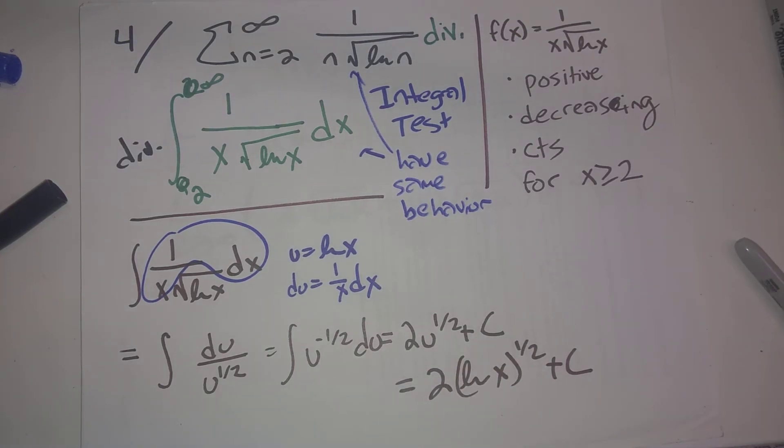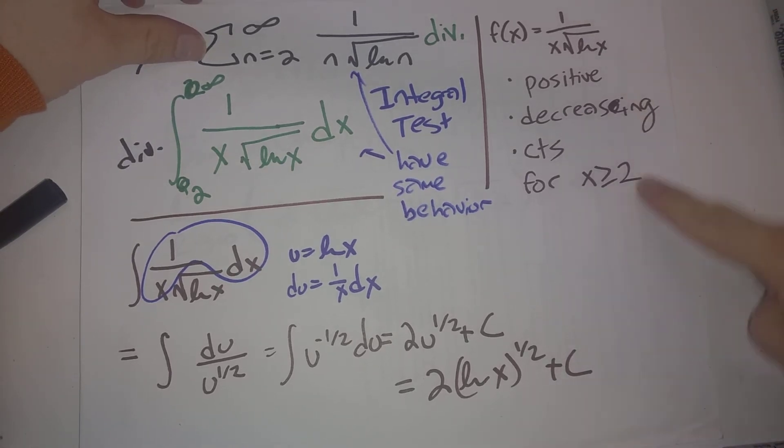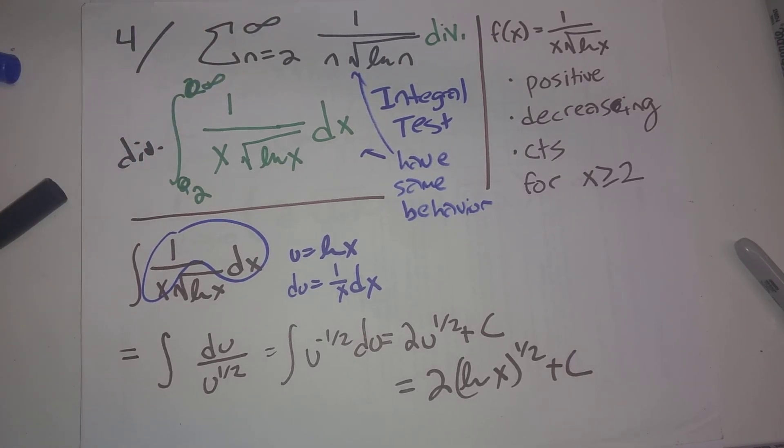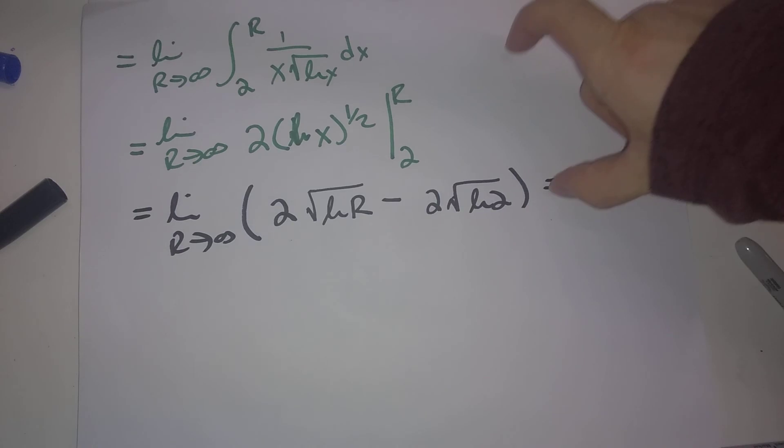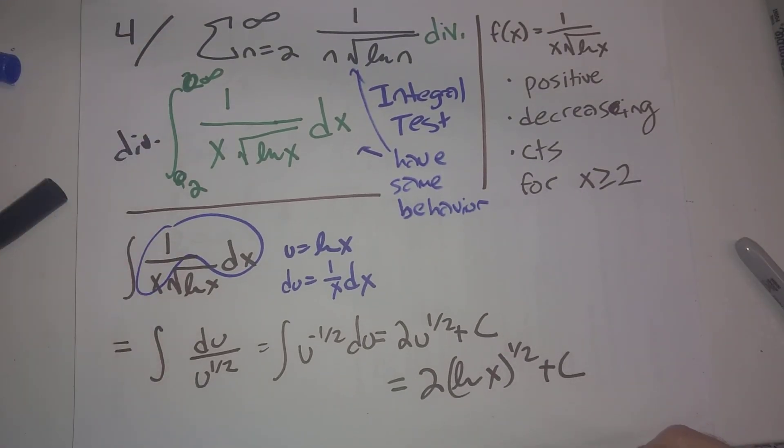So to recap, what did we do here? We realized that if we replace n with x's, this is an integral that we can find the anti-derivative of using substitution. We checked the conditions on f of x here to make sure the integral test applies. So this series and this improper integral have the same behavior, they both converge or they both diverge. All of our work here is used to show that the improper integral diverges, so we conclude the original series diverges as well.